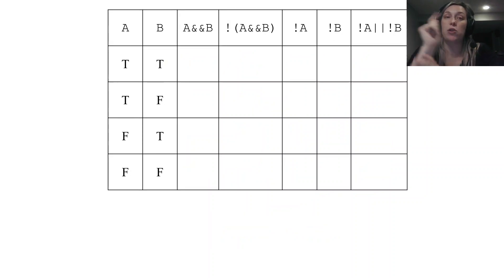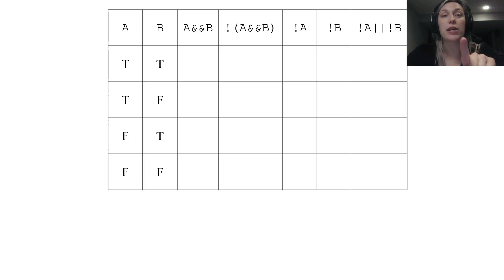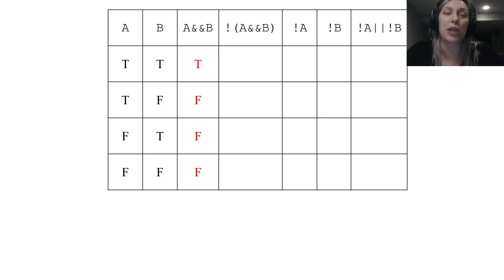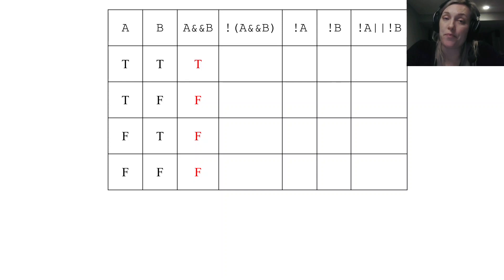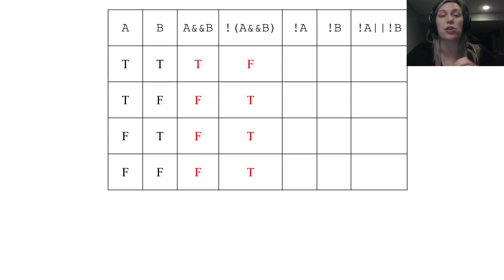Let's look at the second DeMorgan Law — same approach, truth table, and we'll notice which columns are the same. I start with A and B: A and B evaluates to true only when both are true. Then I have not (A and B), so I take that column and switch those logical expressions to false, true, true, true. Not A switches the A column; not B switches the B column.